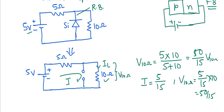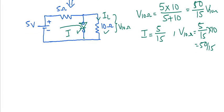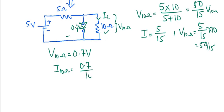Now if we reverse the diode condition to forward bias, we assume the diode is ON. For a practical silicon diode, it will have a voltage drop of 0.7 volts. Since the diode is in parallel with the 10 ohm resistance, the voltage drop across that resistance is also 0.7 volts. The current through the 10 ohm resistor is simply 0.7 / 10 amperes.